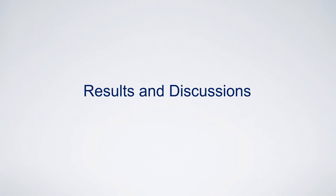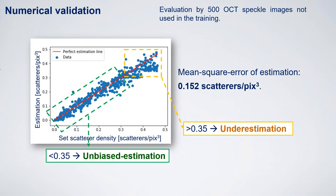Let me show some results of our estimator and discuss them. We evaluated the performance of the CNN estimator using 500 numerically generated OCT speckle images not included in the training dataset. The performance was quantified by the root mean square estimation error, which was 0.15 scatterers per cubic pixel. When the set value was less than 0.35, the estimation was unbiased. When the set value was more than 0.35, the CNN slightly underestimated the scatter density. However, the estimation is still reasonable.